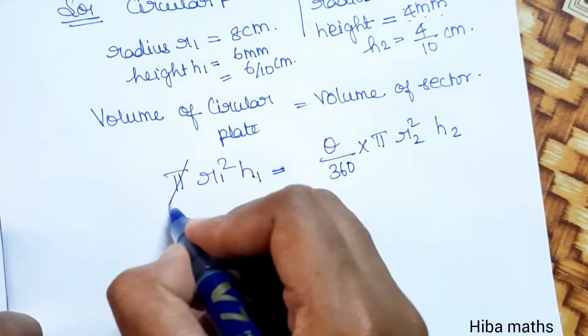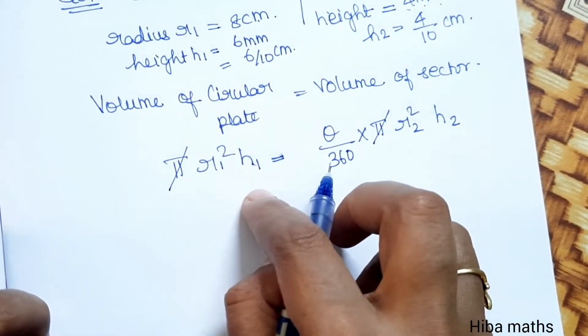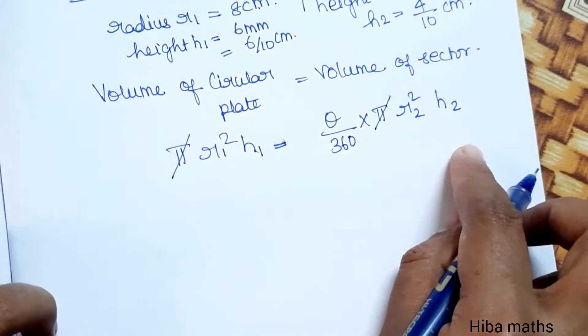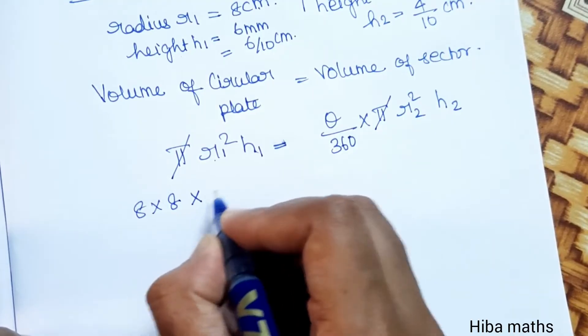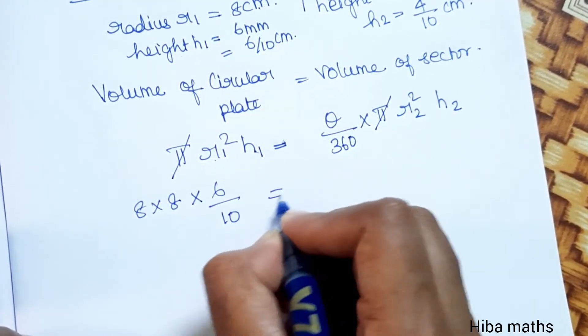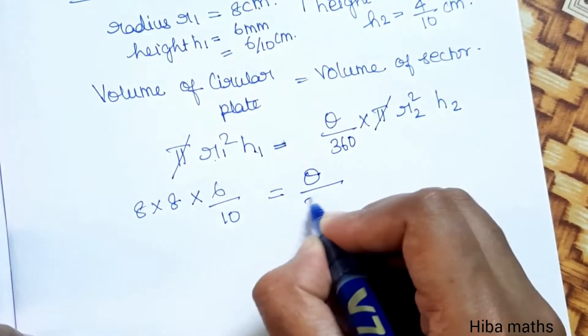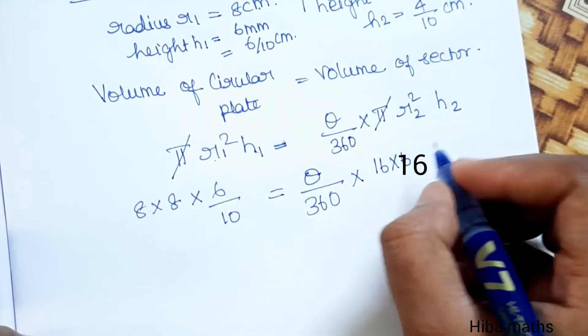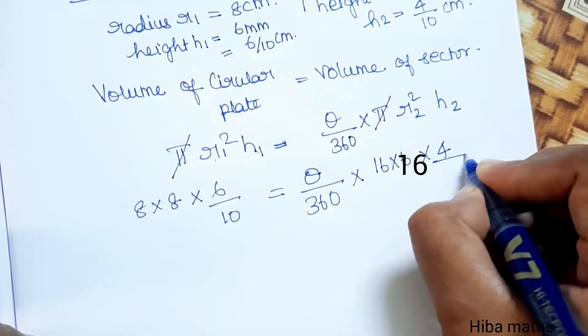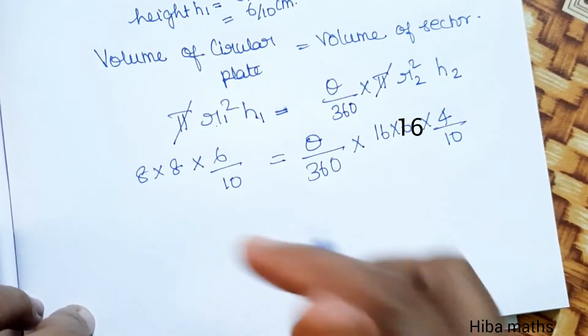Substituting values: π × r1² × h1 = (θ/360) × π × r2² × h2. So π × 8² × (6/10) = (θ/360) × π × 16² × (4/10).